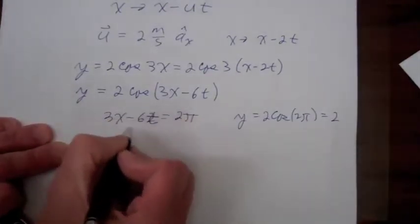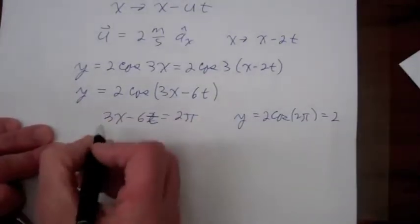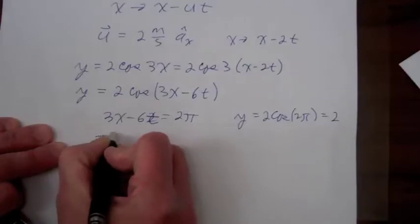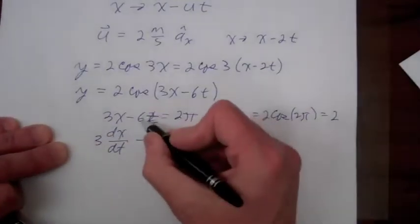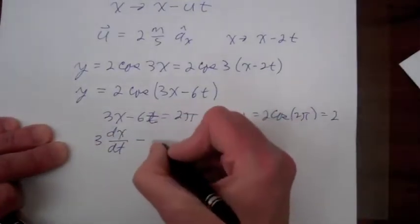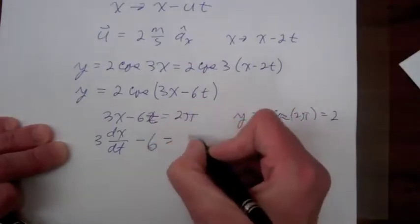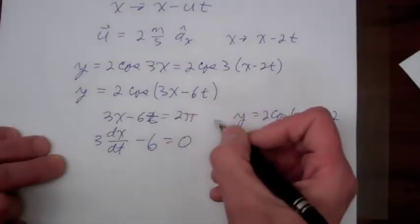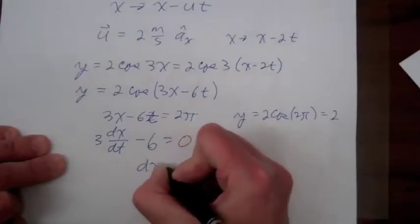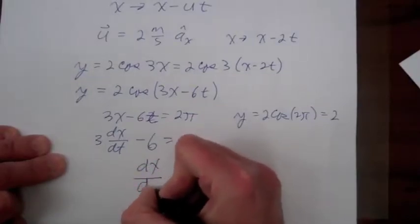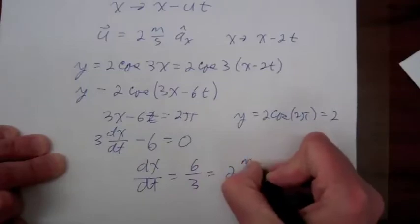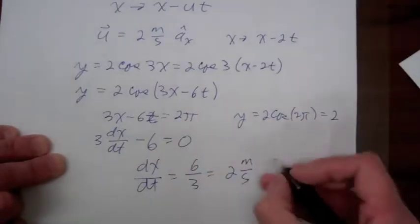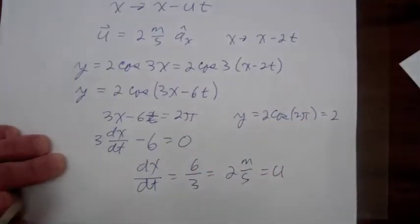Taking the derivative with respect to time: 3(dx/dt) minus 6 equals 0, since 2π is a constant. So dx/dt = 6/3 = 2 meters per second, which is the velocity of our wave as we originally assumed.